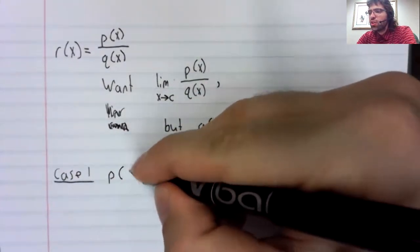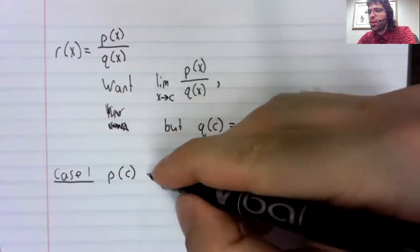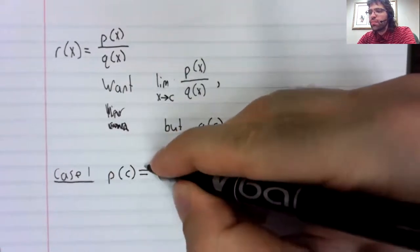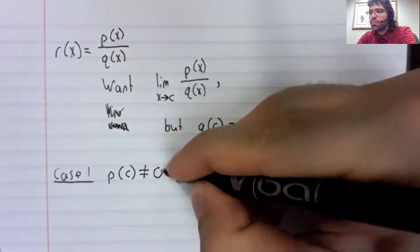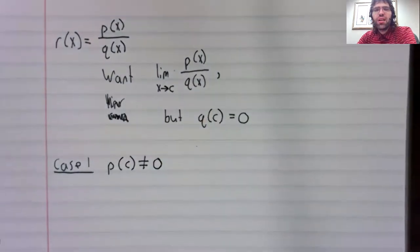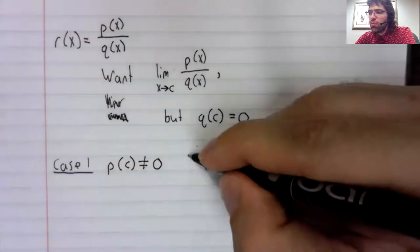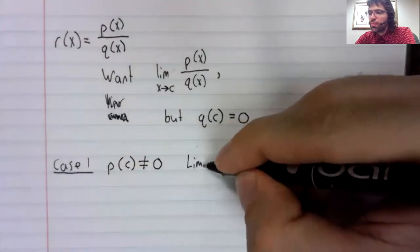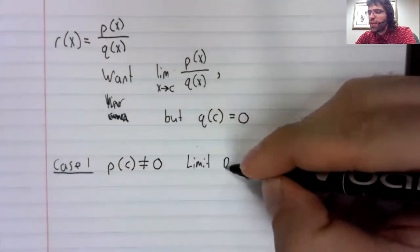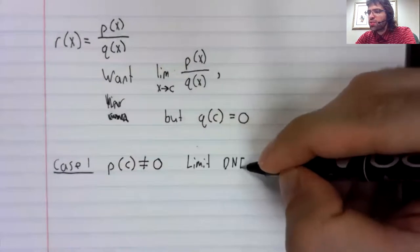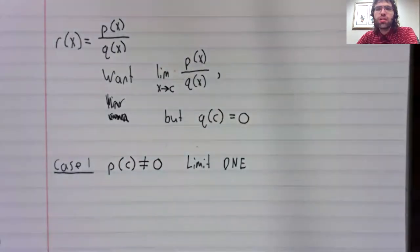Suppose that p of c is anything other than zero. Then this limit does not exist.